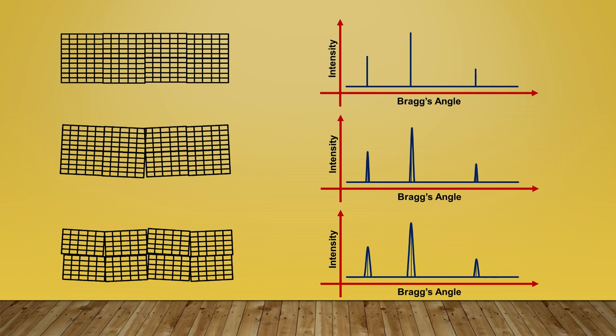So in this way the crystallite is defined as the average size of the portion which diffracts light coherently in XRD. Now let us move towards the definition of a grain.